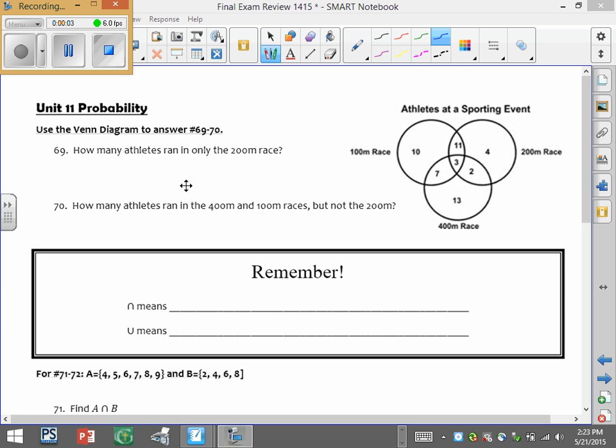So here's a final video from this semester when we did probability. We take a look at this Venn diagram on different races that these athletes have done. So how many athletes ran in a 200-meter race?